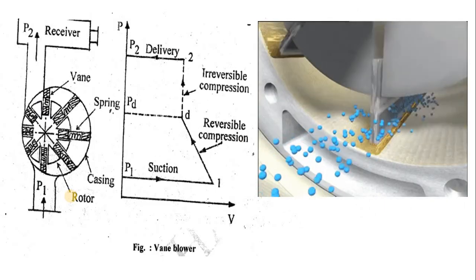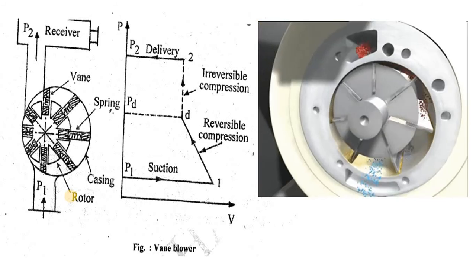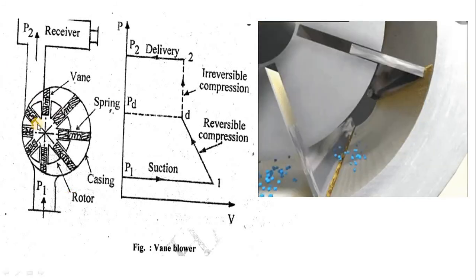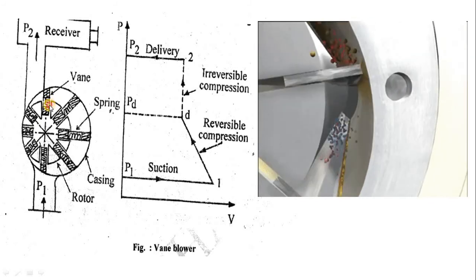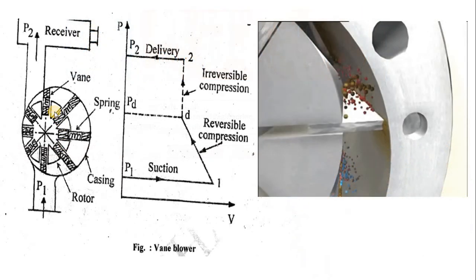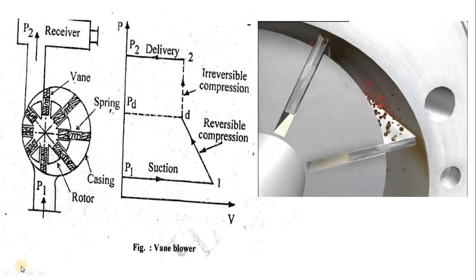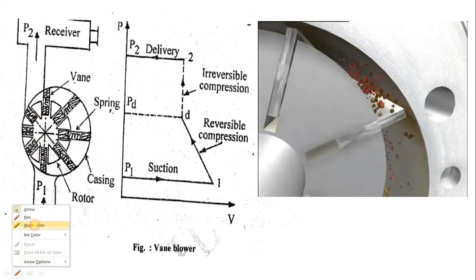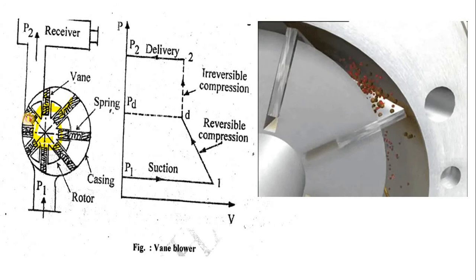The next important rotary type of compressor is the vane type compressor. Here there is one eccentric rotor. On that particular eccentric rotor, slots are provided. Minimum 7 to maximum 11 slots are to be provided on the eccentric rotor.